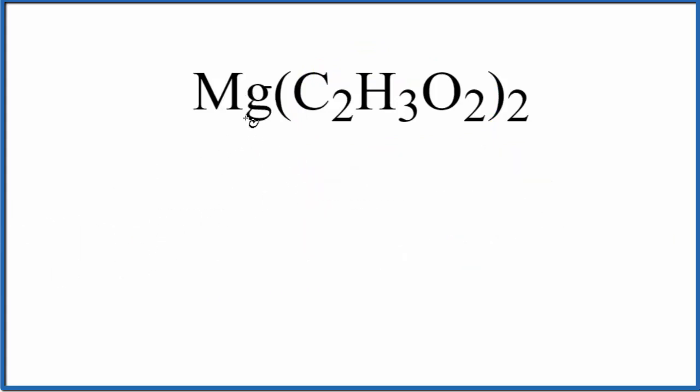Since we have magnesium, that's a metal, and then this acetate ion C₂H₃O₂, that's a group of nonmetals. Metal and nonmetals means this is an ionic compound.